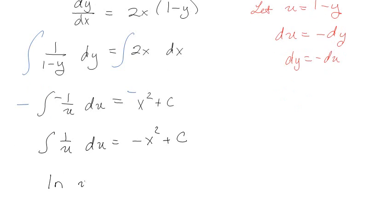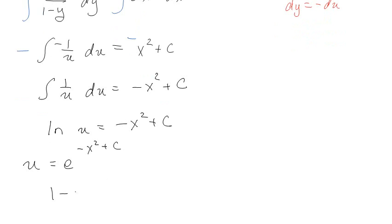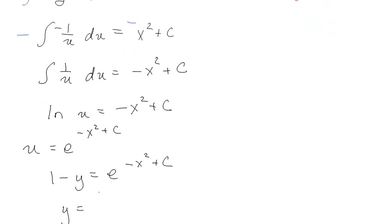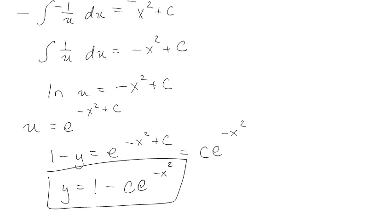So I have the natural log of u equals negative x squared plus c. Then e to the negative x squared plus c equals u. But u was 1 minus y, so 1 minus y equals e to the minus x squared plus c. Then solving for y gives y equals 1 minus C times e to the minus x squared. That's beautiful — it was amazing.